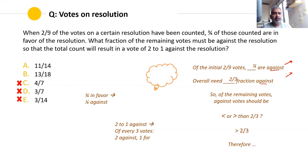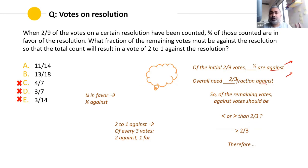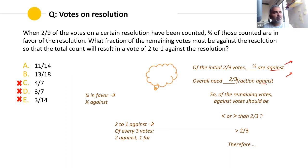If I reach this stage of thinking, I could eliminate those choices in maybe 15-20 seconds after reading the question — very useful if running out of time. And even if I had time for the full calculation, doing this first boosts confidence: I know the answer must be either 11/14 or 13/18. If I get anything else, I know I've made a mistake — and that puts me in a much better mental state.